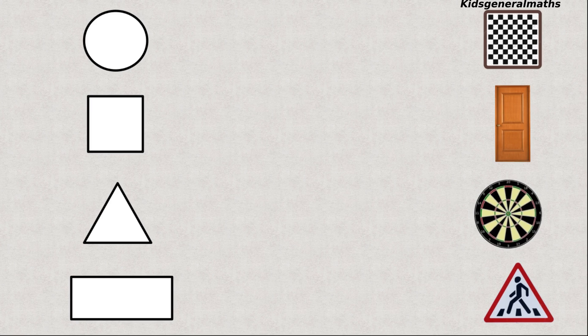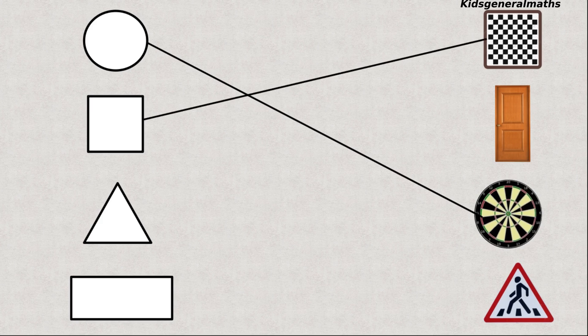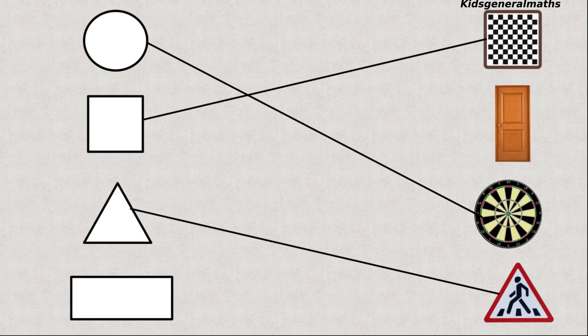First they have given circle. So where is the circle shape? Yes, it is here. Next they have given square. So we are going to match the square. Next they have given triangle. So we are going to match the triangle. Where is it? Yes, it is here. Next rectangle. So we are going to match the rectangle.